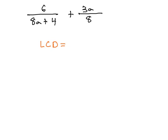This implies we need to factor each denominator. Here, we have 6 over 8a plus 4, plus 3a over 8. That left denominator can be factored with a GCF of 4, leaving behind 2a plus 1.